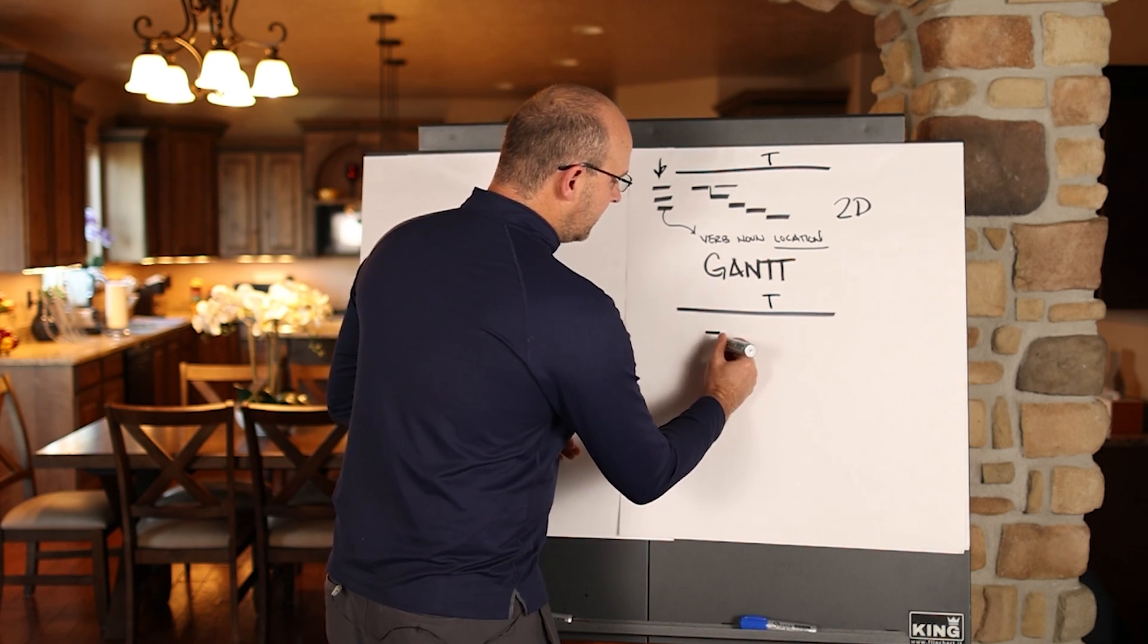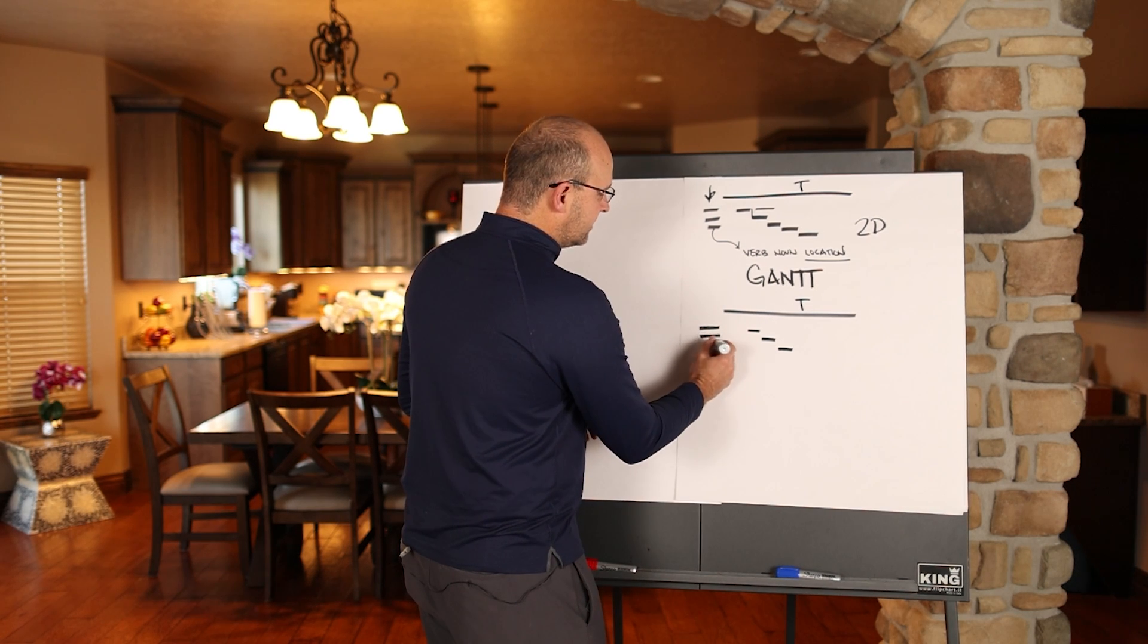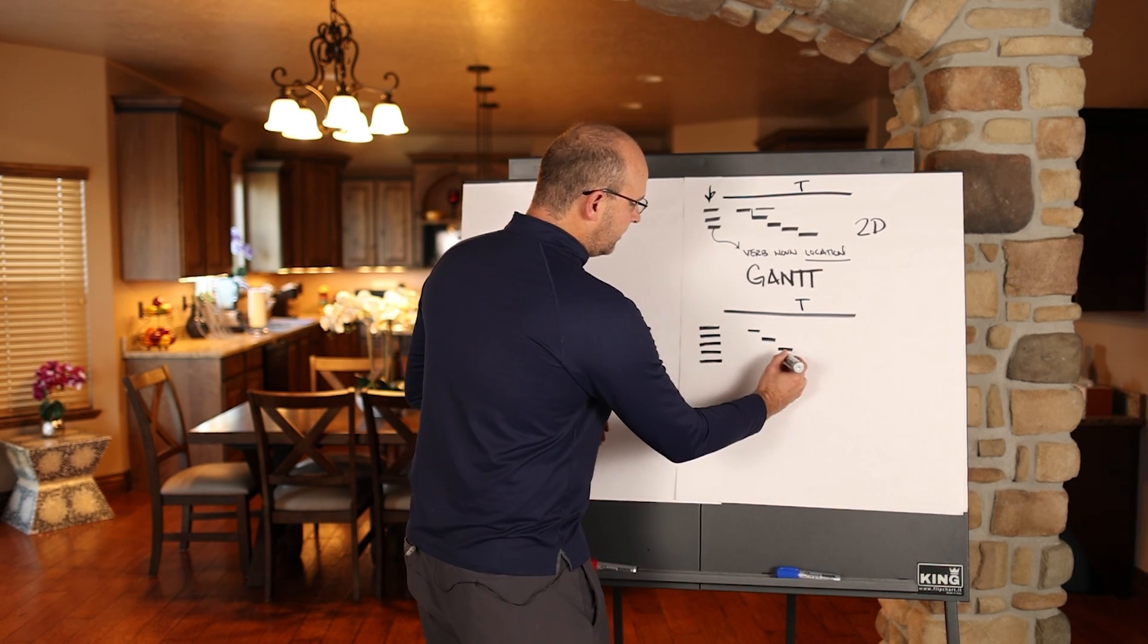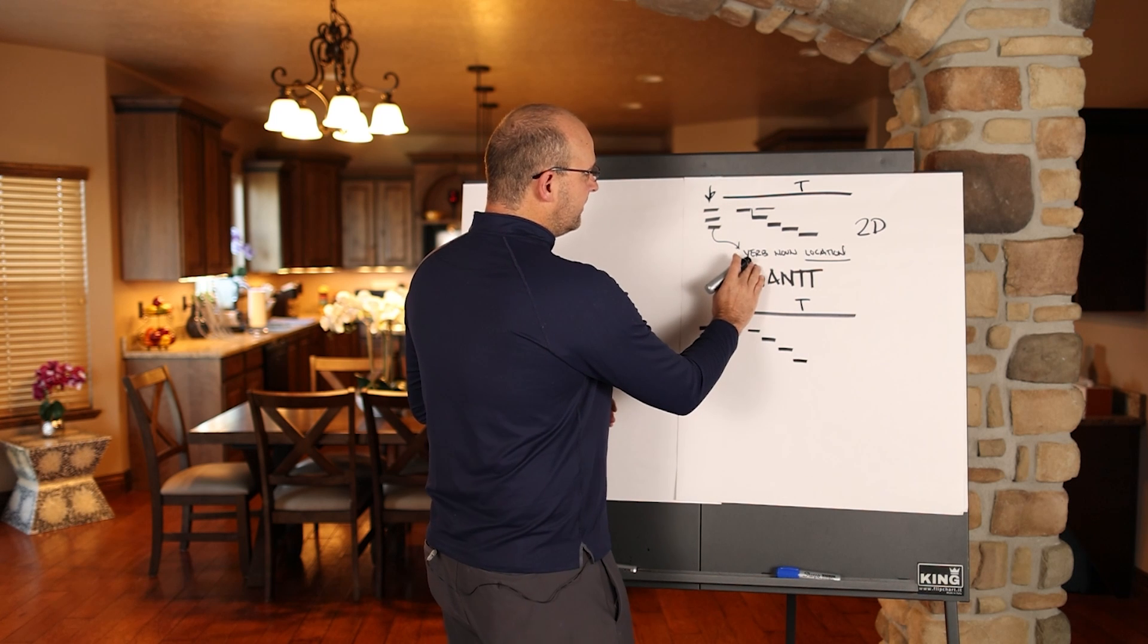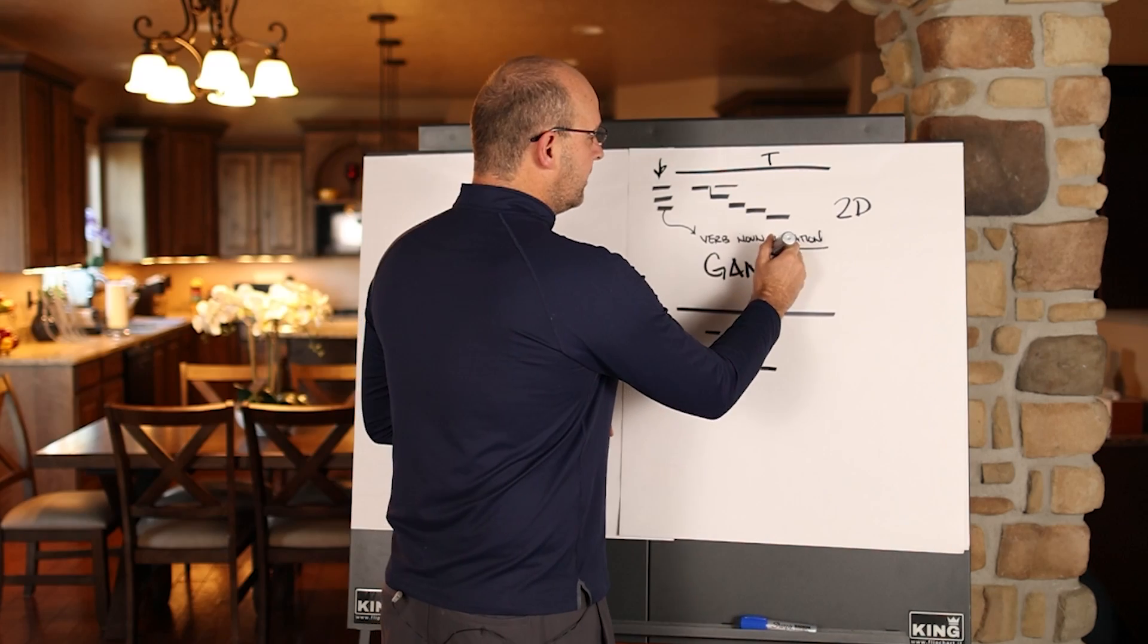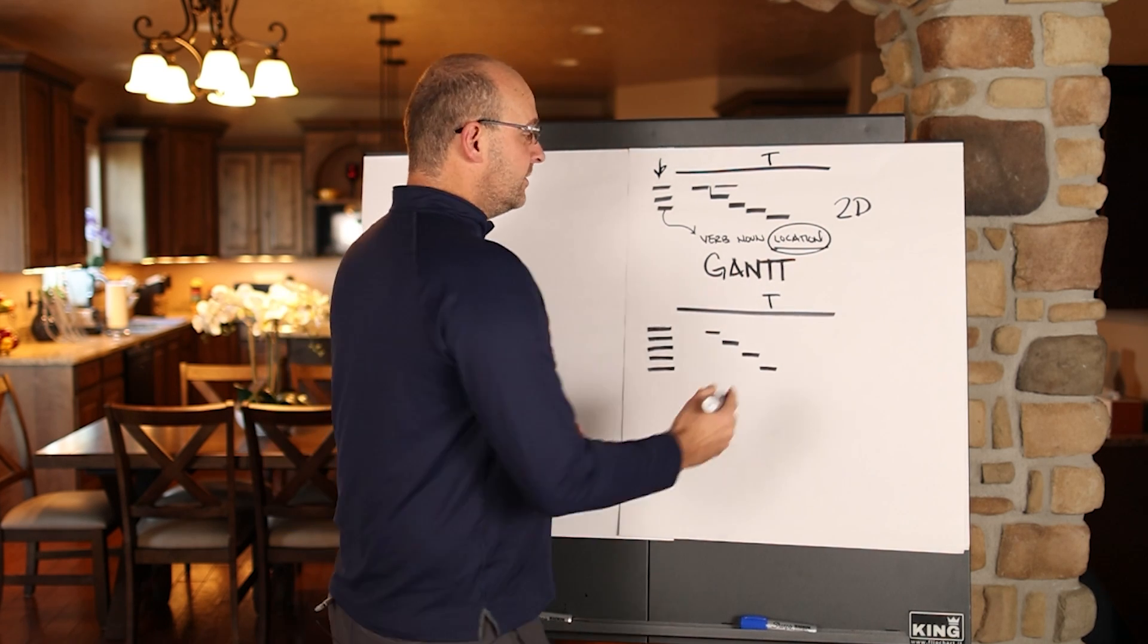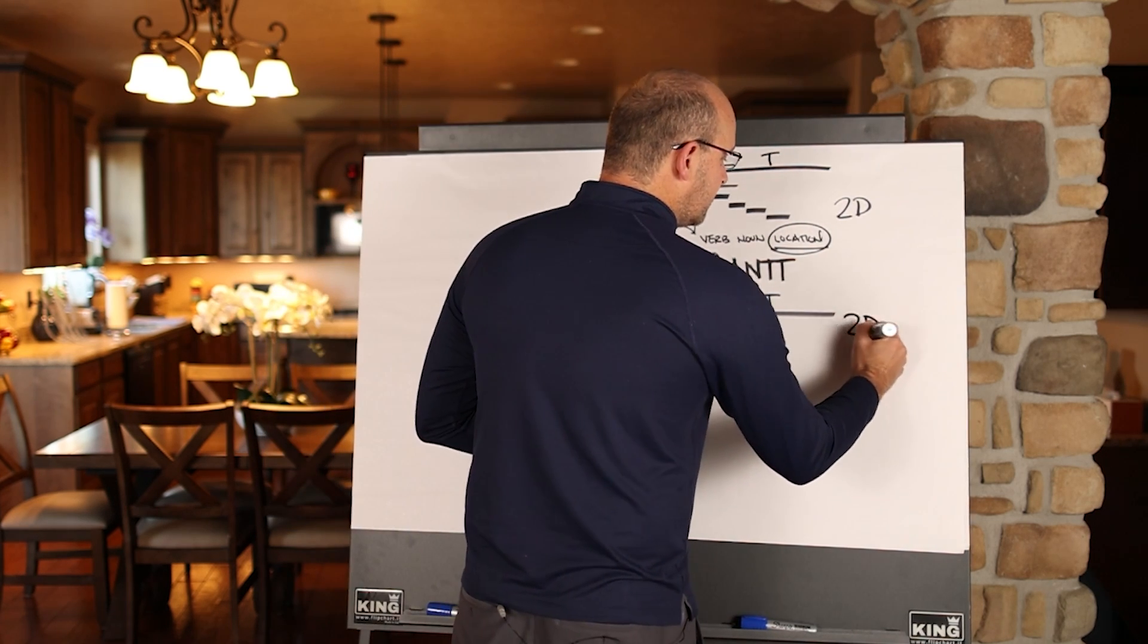You'll have activities throughout, and on the left, you will see the activity description, and again, you will see the activity descriptions be described as verb, noun, and location, and this right here being in the activity description is problematic. So again, this is a two-dimensional schedule.